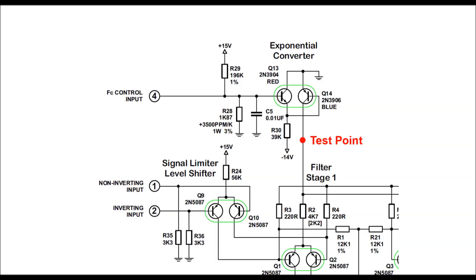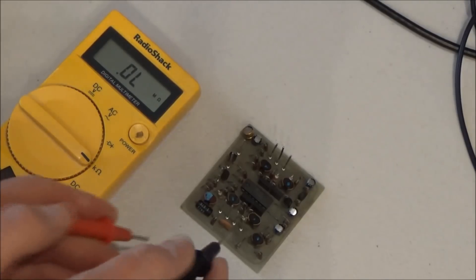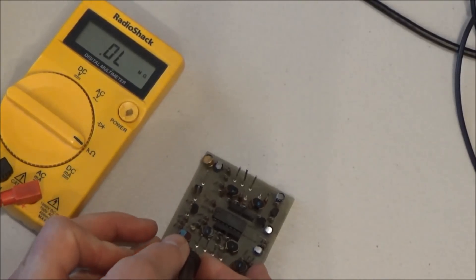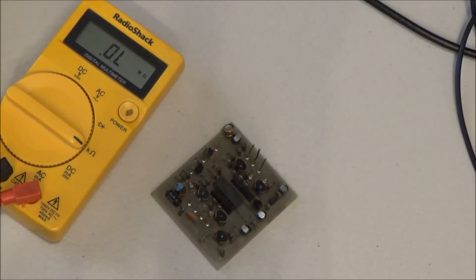So here in the exponential converter we only have a few components. We have two regular resistors, a ceramic capacitor, a Tempco resistor, and a complementary pair of PNP and NPN transistors. The only parts I'd expect to see fail would be the Tempco and the transistors. So we can measure the Tempco in circuit here. One end of the Tempco is connected to ground because the filter now is not connected to anything. It's a 1.87 kilo ohm Tempco and we're measuring exactly that. The Tempco looks good.